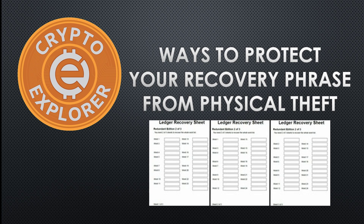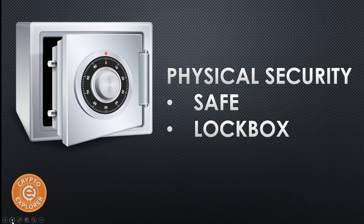So with Bitcoin and a lot of wallets and different cryptocurrencies, when you create a wallet, they give you a recovery phrase so that you're able to restore it in case you lose your computer. For example, if you're using the Ledger Nano S and need to buy a new one if it's not working. A lot of the times, with the Ledger, they give you a little sheet to write down the words and store it in a safe place — either a safe or a lockbox. But that's not always the most secure thing to do in terms of physical security.